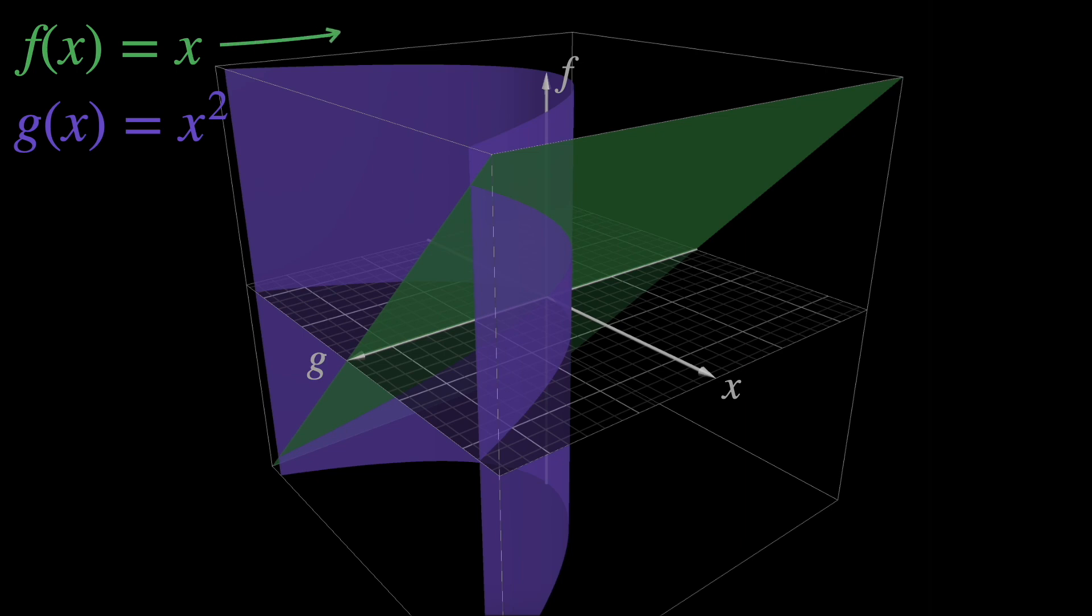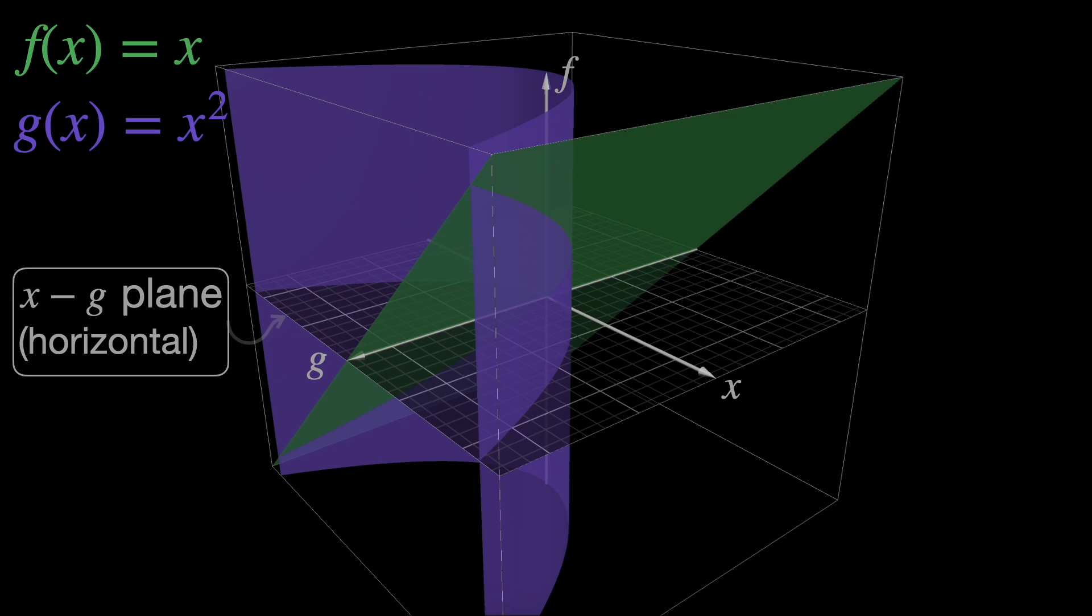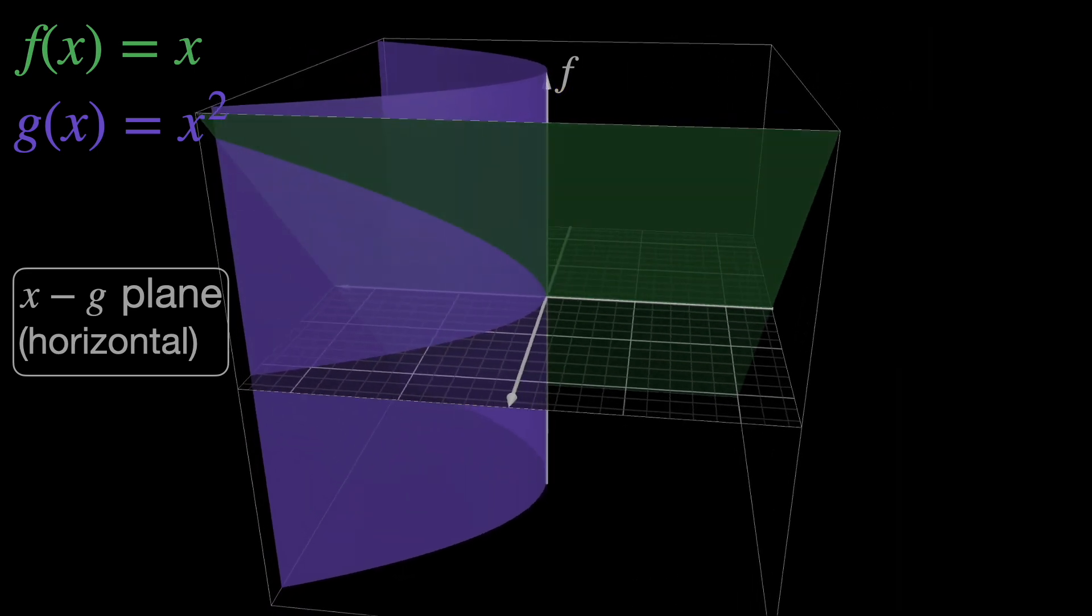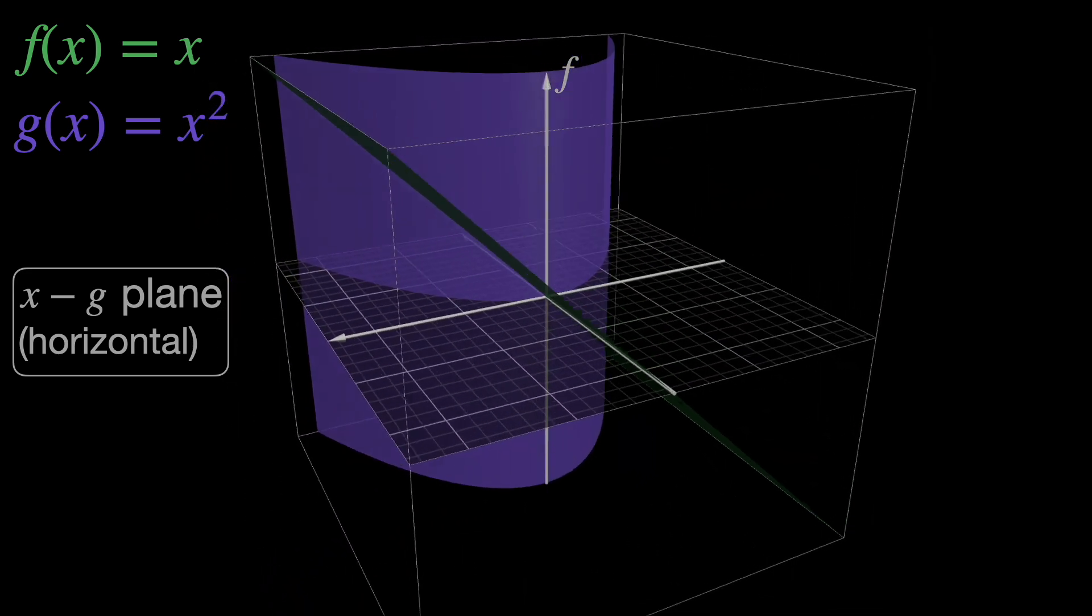The function f equals x is the green one, and g equals x squared, the purple. Hence, this horizontal plane is formed by x and g. Observe them attentively, in order to fully grasp what's going on here.